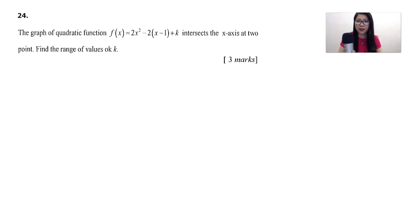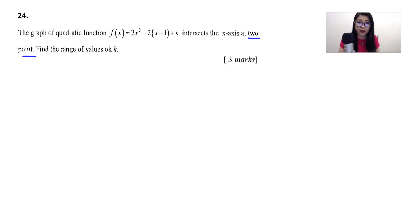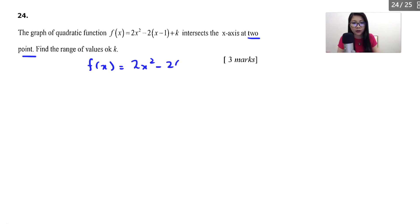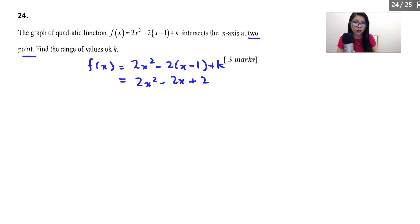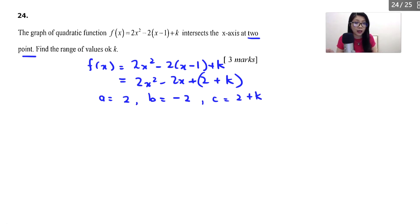Let's look at question number 24. This is quadratic functions. The graph of f(x) = 2x² − 2(x − 1) + k intersects the x-axis at 2 points. The keyword '2 points' means we need b² − 4ac > 0. Find the range of values of k. Expanding: f(x) = 2x² − 2x + 2 + k. So a = 2, b = −2, and c = 2 + k.